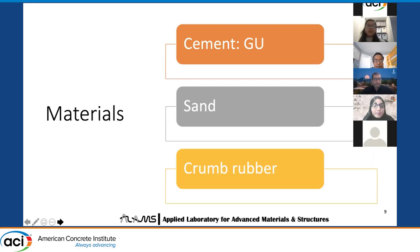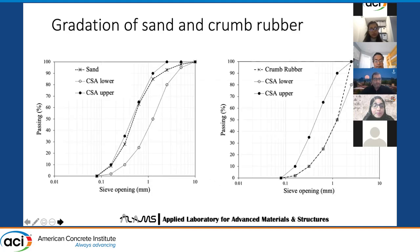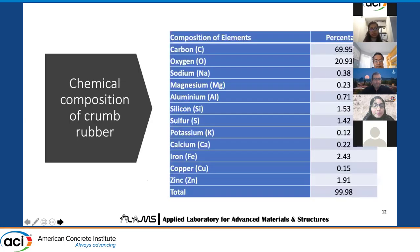The materials that were used were: as binding material, cement — the generally used cement — and sand, since we were working on mortar samples only, and crumb rubber was used to replace sand at various percentages. These are some properties of sand and crumb rubber, and this is the gradation curve of sand and crumb rubber. You can see that it fits into the upper and lower boundaries of the CSA standard, so it could be used. This is the chemical composition of crumb rubber.